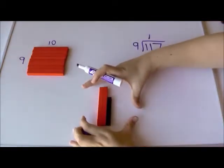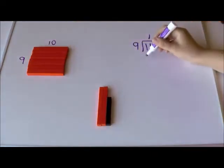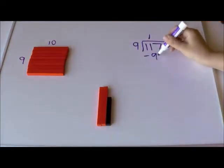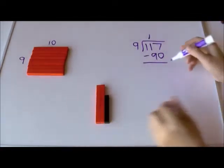So I had 117 down here, and I took away 90. So to represent that with symbols, do that. Minus 90. And what do we have left? 27.